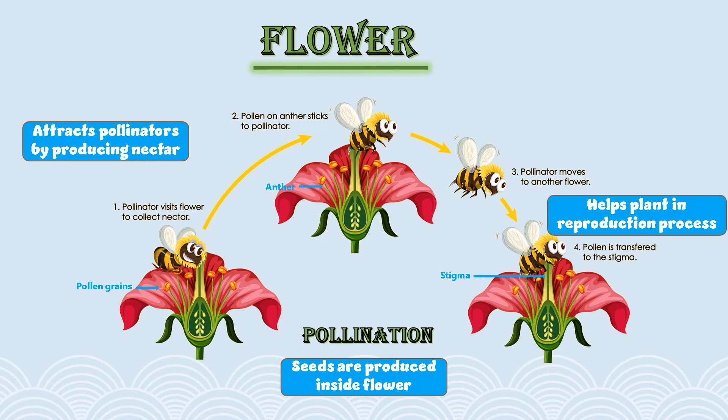This whole process is called pollination. It allows the plant to reproduce. In short, the transfer of pollen grains from the anther to the stigma of a flower for fertilization is called pollination. This can be done by wind, water, insects, or animals — and they are called pollinators.